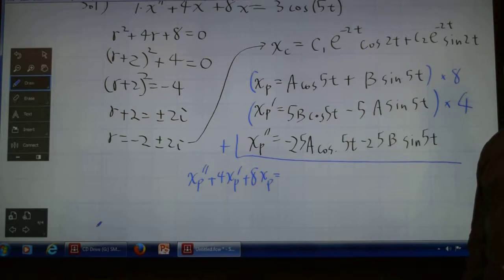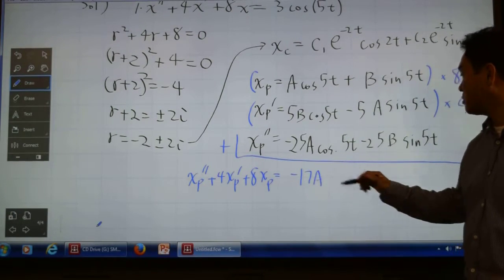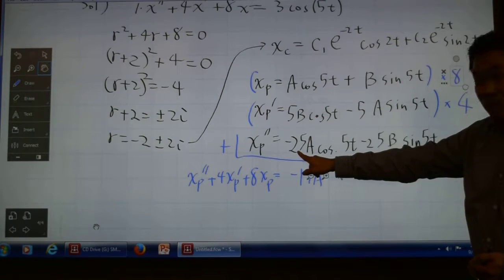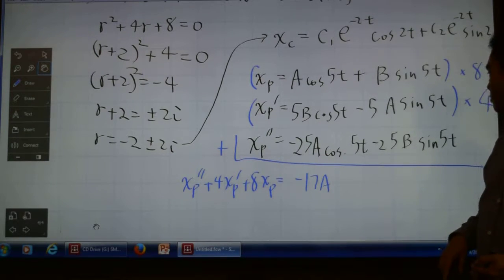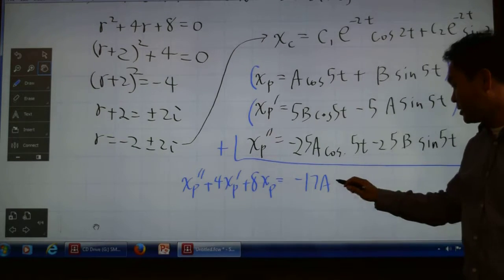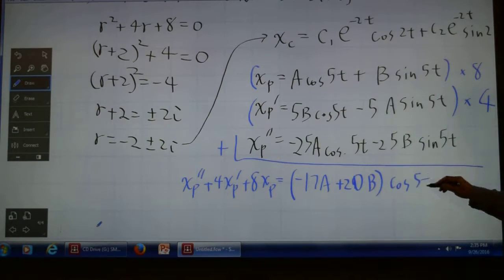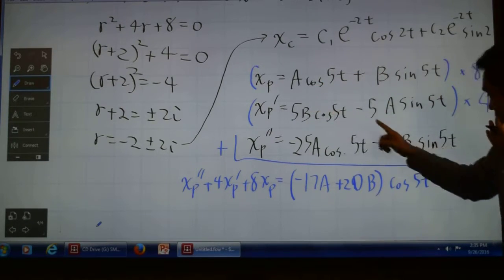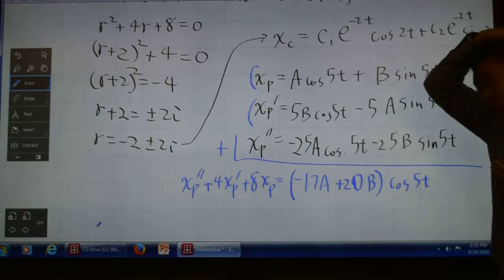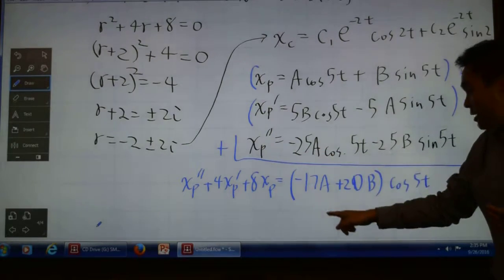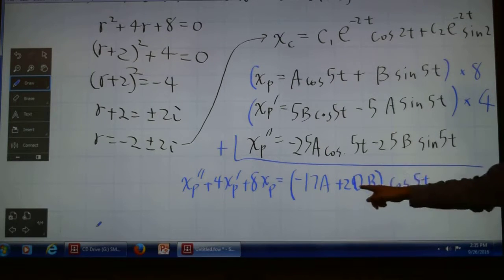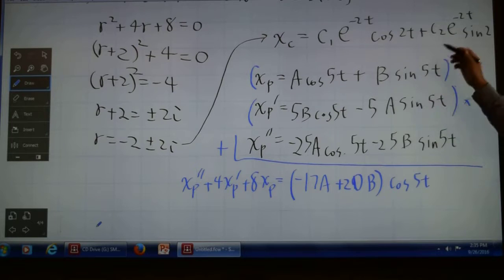If I add up all the cosines: 8 times A minus 25A is -17A. And 4 times 5B is 20B. So I get (-17A + 20B) cos(5t).